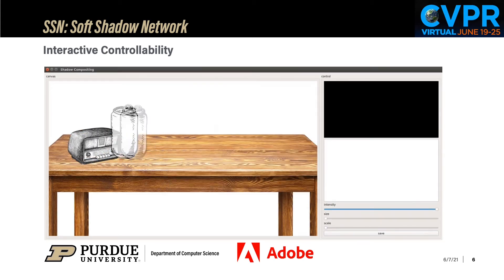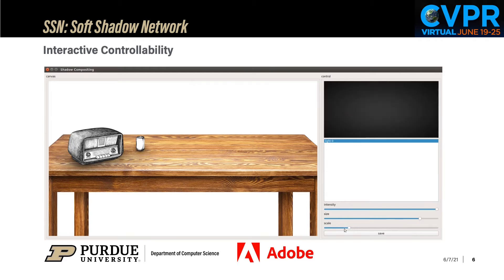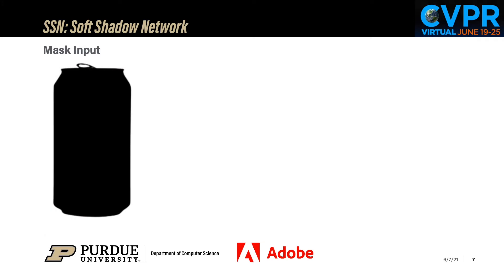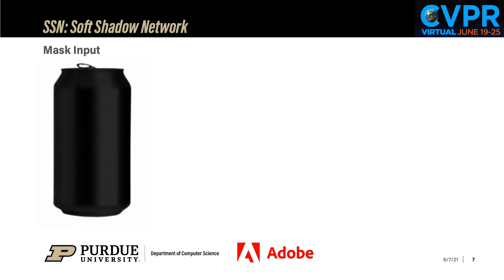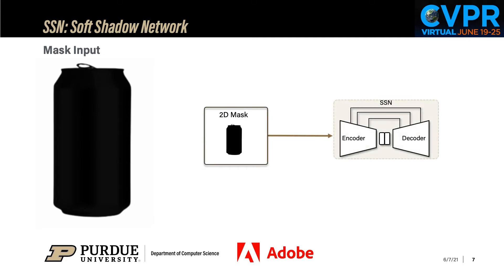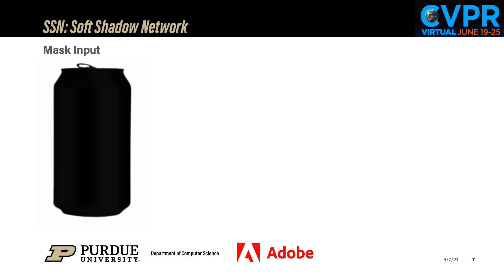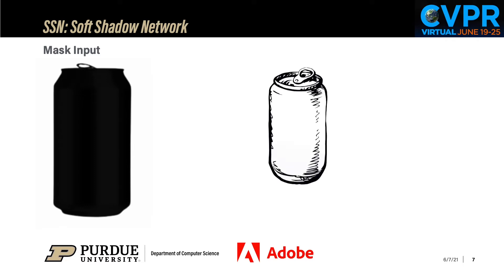Users can use an intuitive graphics interface to modify the lights to render their desired soft shadows. Humans can hallucinate the 3D shape from image silhouettes for some iconic views. Following this observation, SSN uses the mask of the composition image as input. The advantage of using mask inputs is that it is agnostic to textures and can generalize to other domains — for example, SSN is able to render soft shadows for vector arts or cartoons.